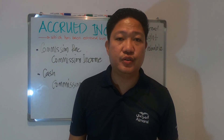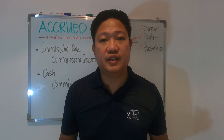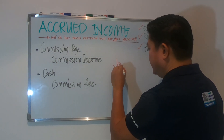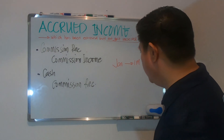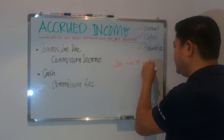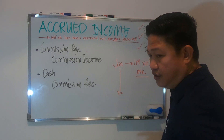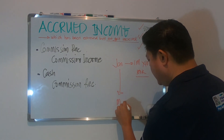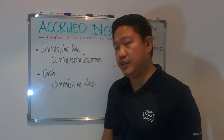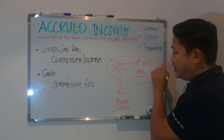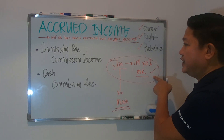Let's say you have a bookstore and the author approaches you to sell his books for a 10% commission, and he will pay your commission on a quarterly basis. For the month of January you sold 1 million worth of books, and of course you have to recognize the 10% commission of 100,000. However, the author agreed to pay you somewhere in March, but you are preparing a financial statement for the month of January.